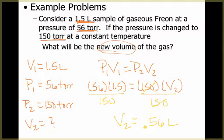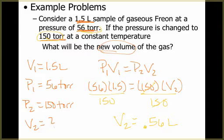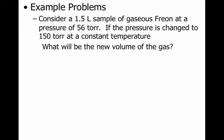The only thing you have to be careful of here is that the units are the same on both sides. If they give you two pressure units, they both have to be the same. They don't have to be any particular unit, they just have to match. So if one had been given in torr and one had been given in ATMs, you would have to convert one using those conversion factors to make sure they were both the same.